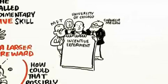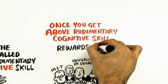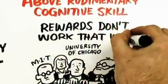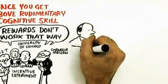They're saying that once you get above rudimentary cognitive skill, it's the other way around. The idea that these rewards don't work that way seems vaguely left-wing and socialist, doesn't it? It's kind of this weird socialist conspiracy.